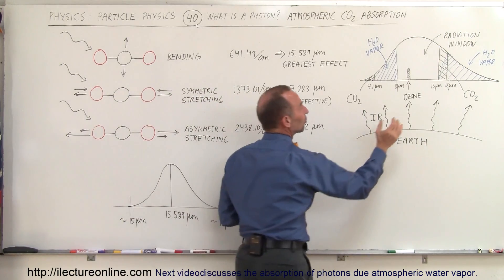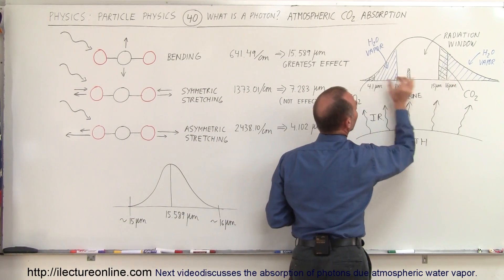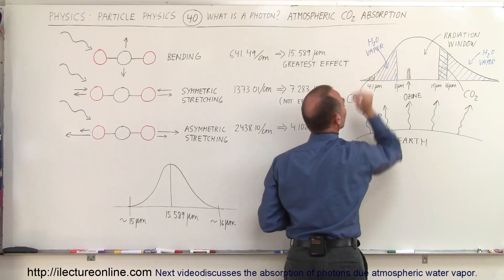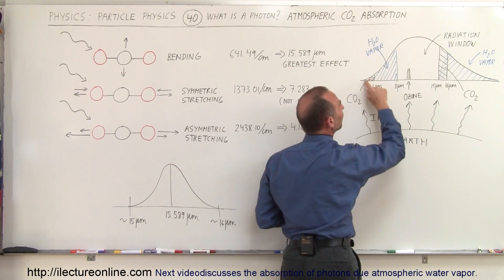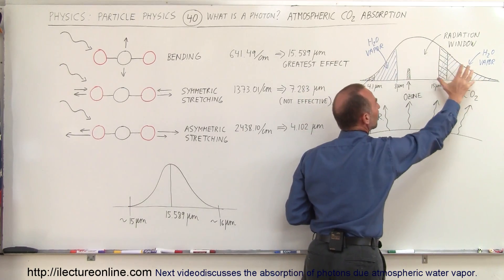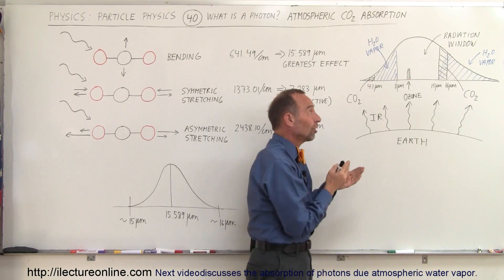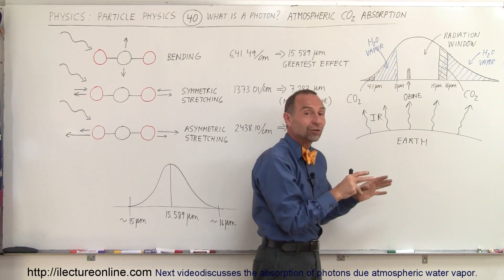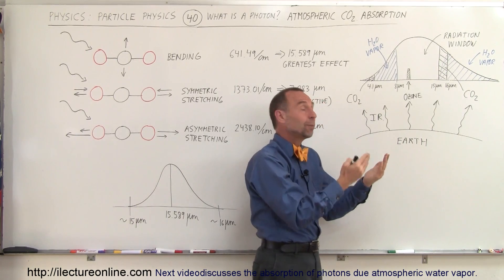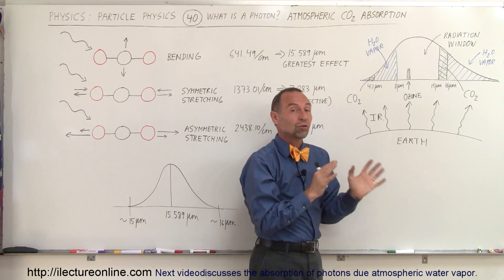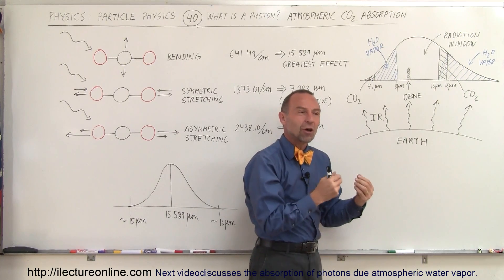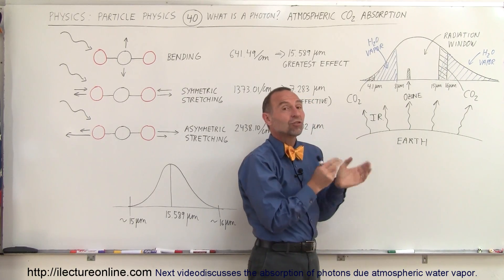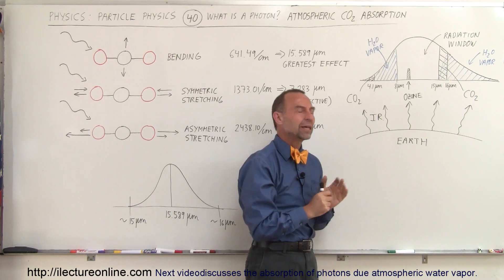Notice that because carbon dioxide can absorb in this band and this band, there's virtually no radiation going back into space in those windows. The blue areas represent the radiation being held back by water vapor in the atmosphere. It turns out that water vapor is far better at absorbing energy from the Earth and keeping it from going back into space than carbon dioxide — water vapor is responsible for about 90% of the greenhouse effect, and carbon dioxide about 10%.